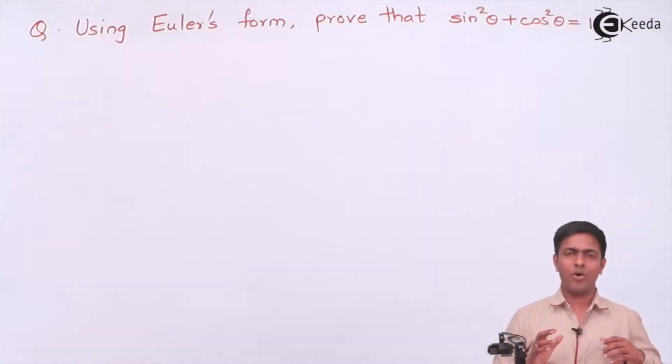Hey students, so now we will solve the numerical which is based on Euler's form. It is given that using Euler's form we have to prove that sine square theta plus cosine square theta equal to 1.